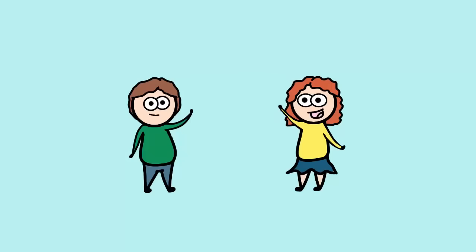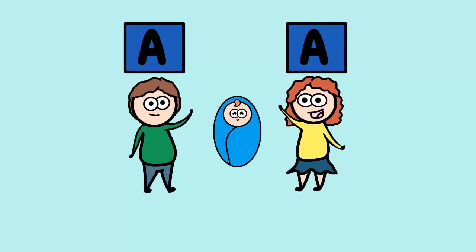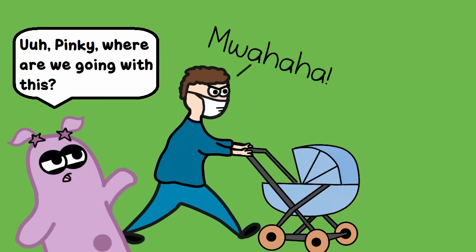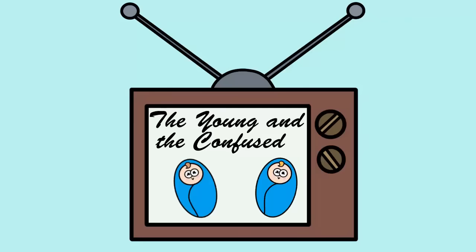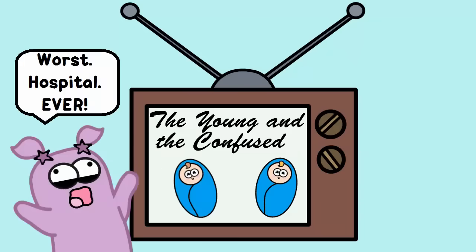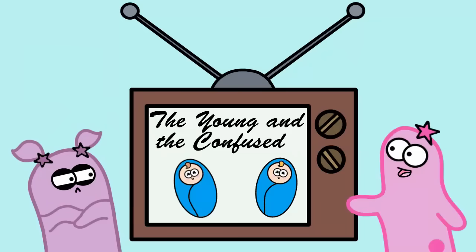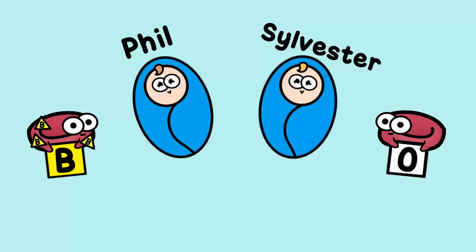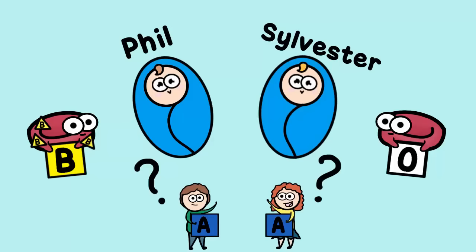Let's say a couple gives birth to a baby boy, but both parents have type A blood and there is a mix-up at the hospital. Now there are two baby boys and the hospital does not know which one belongs to the couple. Let's use our blood type genetic problem-solving skills to help out. Baby Phil has type B blood, and baby Sylvester has type O blood. Could either of these babies belong to the couple who both have type A blood?